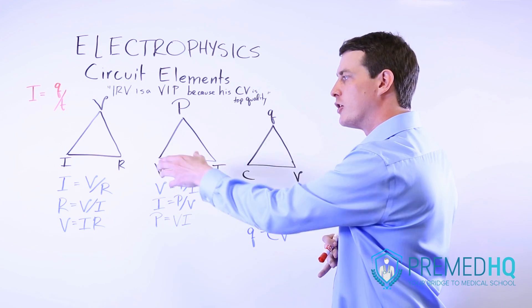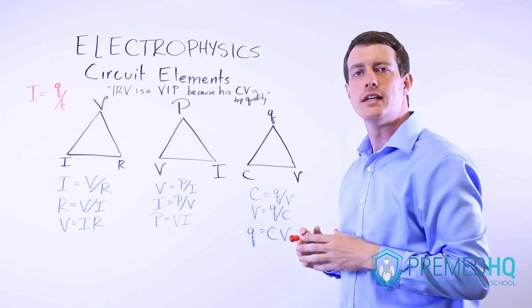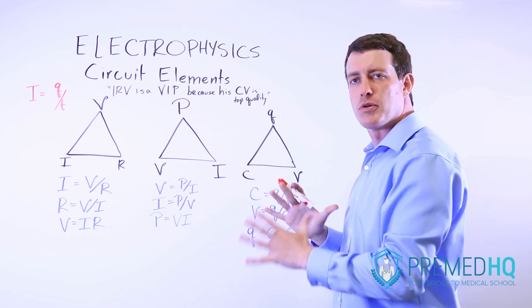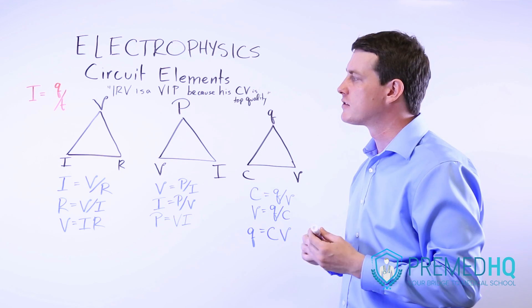So if you just remember these triangles, and Irv is a VIP because his CV is top quality, then you have a lot of the permutations of the major formulas that you're going to be analyzing in terms of circuits.